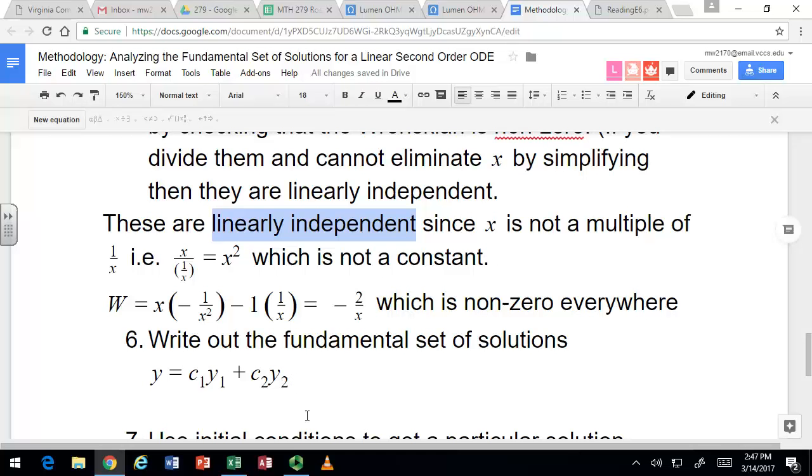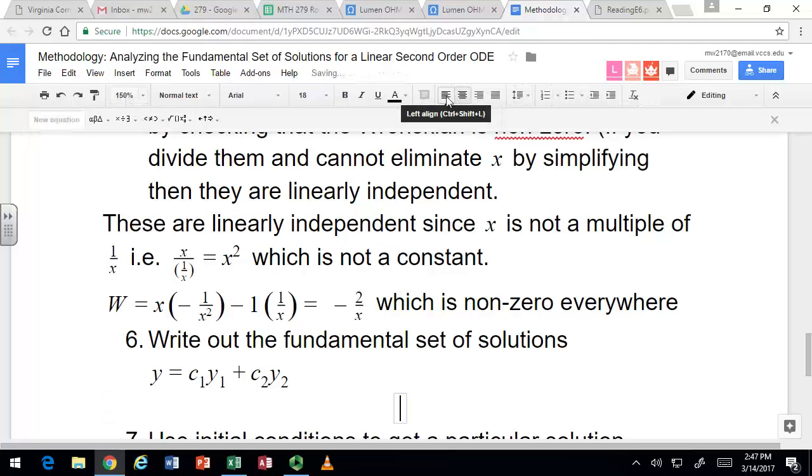Student asks about non-zero and whether constants count. Instructor: Just for non-zero, it doesn't have to be a variable. My point is, even if it's not a variable, if you've got like -2, that would still be non-zero. Yeah, constant would be good. So getting 0 itself is bad. Getting some function that is 0 at certain points could also be problematic.